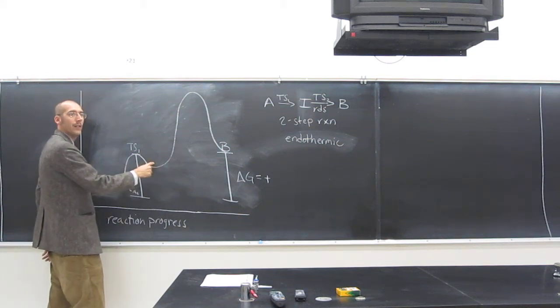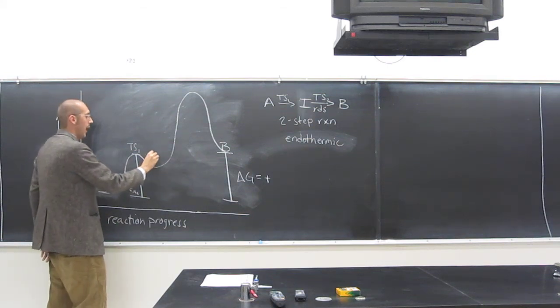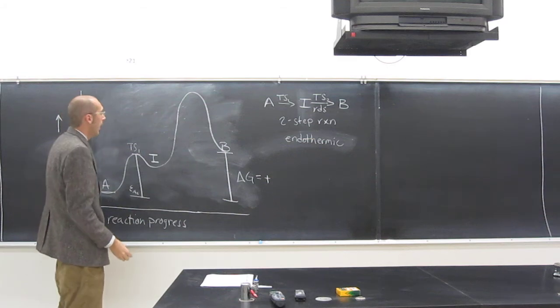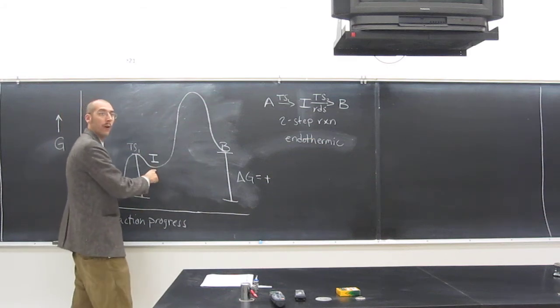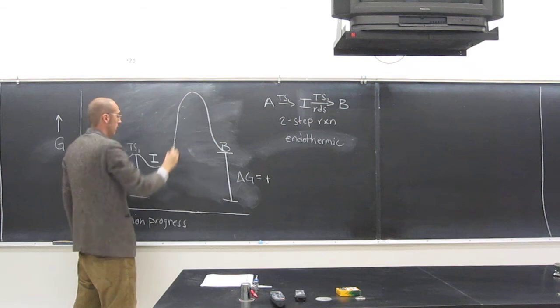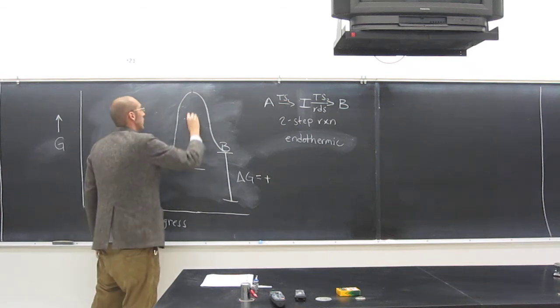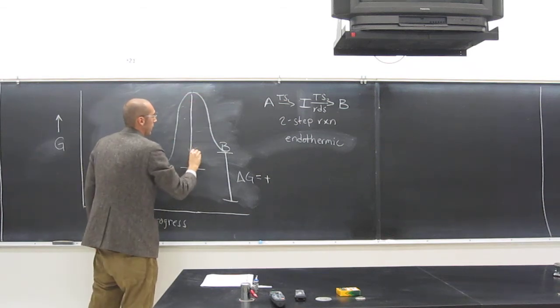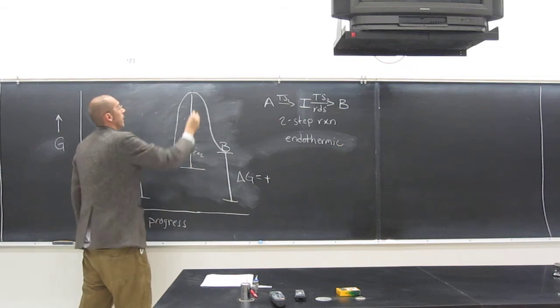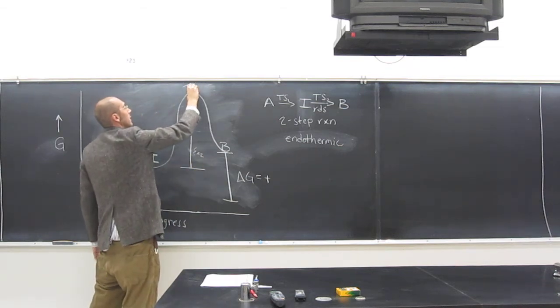And this valley is called what? Intermediate. I, or intermediate. And from the floor of that valley all the way to the top up here is going to be Ea2, right? And this up here is TS2.